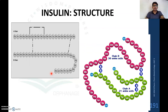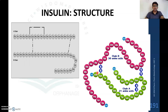Coming to the structure of insulin: insulin consists of 51 amino acids, with 30 amino acids in chain B and 21 amino acids in chain A. Chain A and chain B are linked with disulfide bonds, and chain A is again joined in sequence by a disulfide bond. This is the structure of insulin.